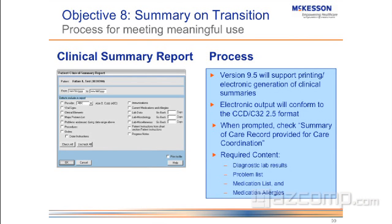This is the next screen that you're going to get — this is that clinical summary report. We've already seen it once, but because we're doing this for an actual provider, you're going to get a little bit different output. You can check all the things that you want to pull on that transition of care and put in the dates for it. Then you can pick which kind of output you're going to have — printing or an electronic generation.